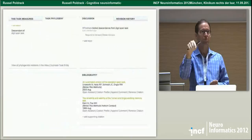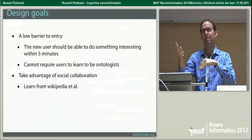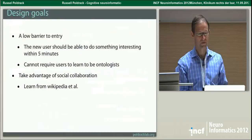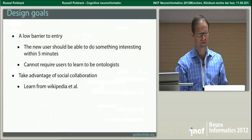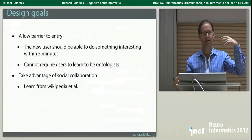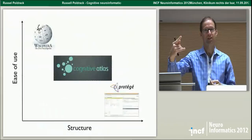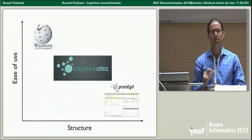Here's a schematic of how the knowledge is laid out in the Cognitive Atlas. We break things into two different types of entities: one is what we call mental concepts — these are conceptual entities, things like working memory, pain, or any psychological concept — and then we have mental tasks, which are the things actually used to measure those mental concepts.